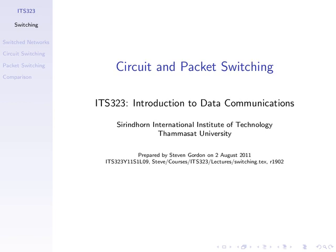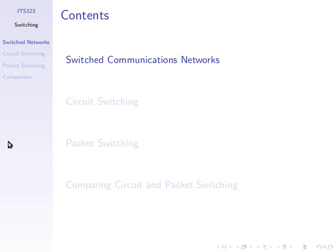A link allows us to share data from one computer directly to another if we have a physical or wireless attachment. But often to be able to communicate with anyone, we need multiple links and we get a network. So we're going to talk about how we connect and forward data across multiple links across a network, and in the next topic, how we choose the path to forward.